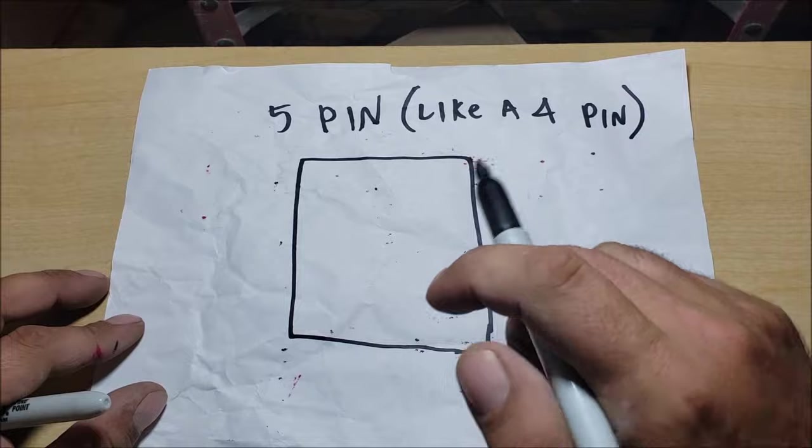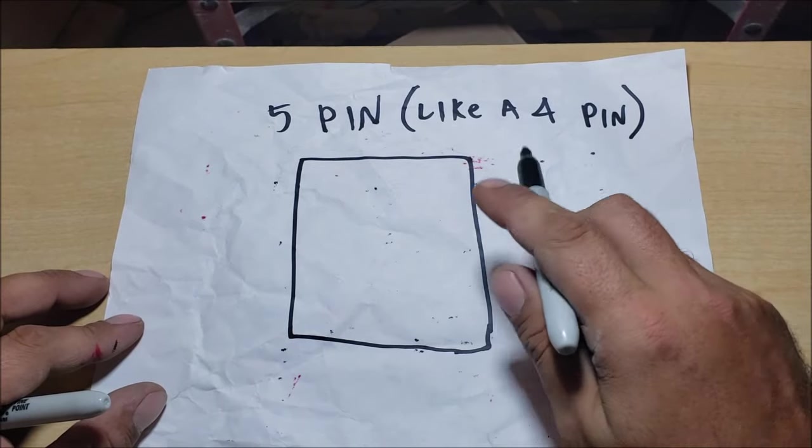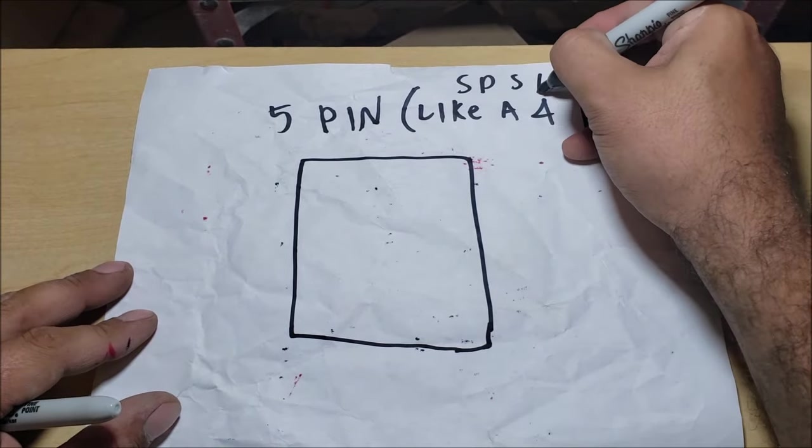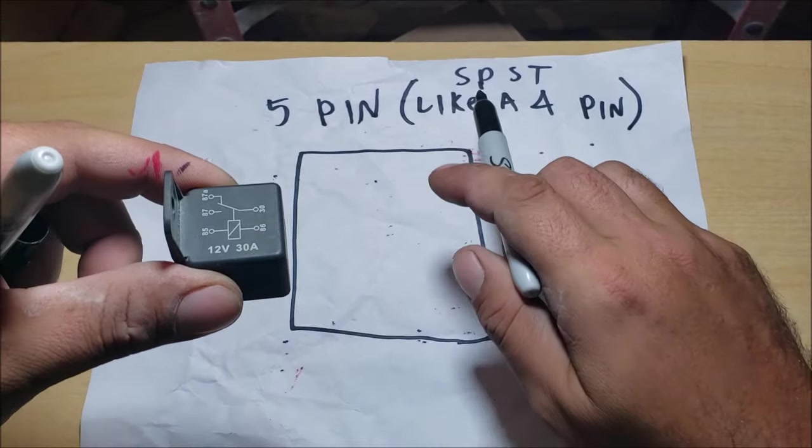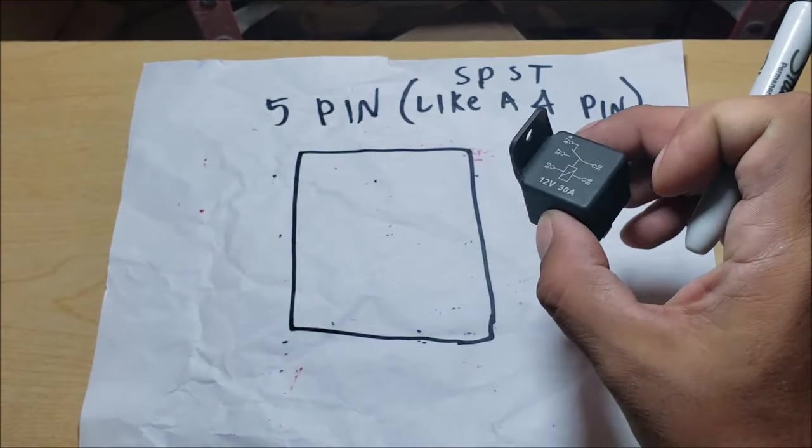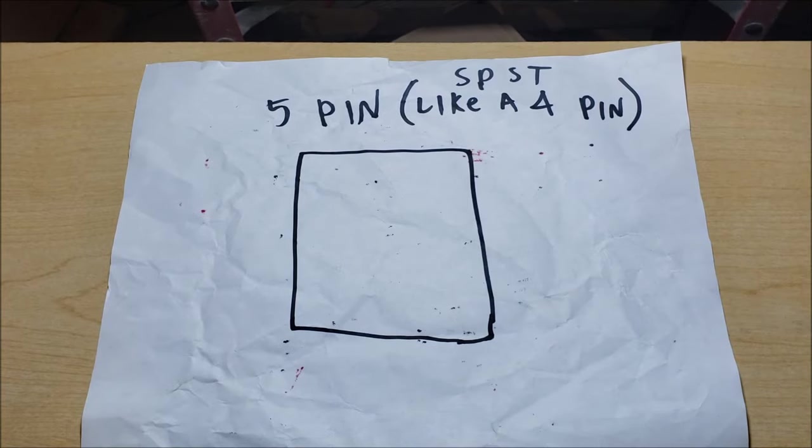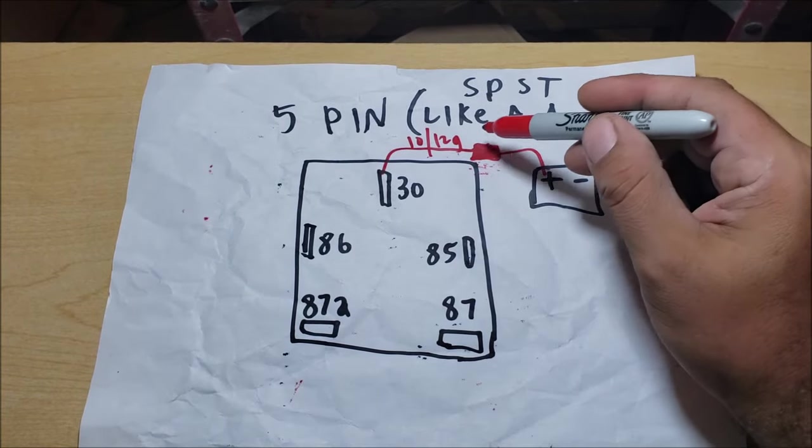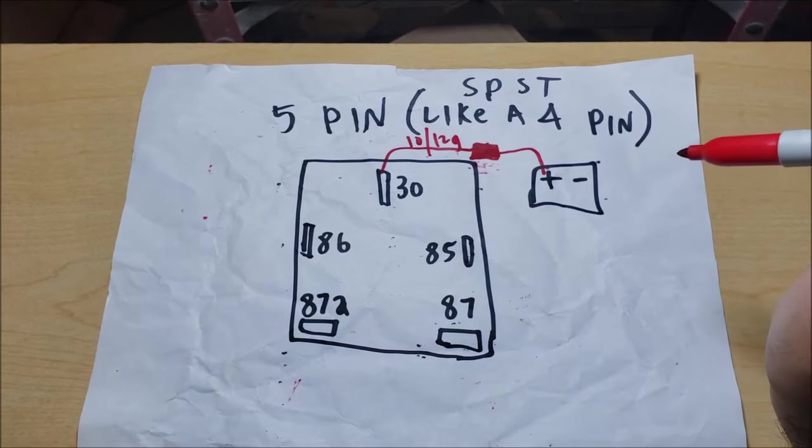They're looking for an on and off switch but they buy the five pin when they only needed a four pin. This is where we're wiring a five pin like a four pin, single pole single throw. So you need your five pin to act as a single pole single throw, it's super easy but when you're first getting into this, I get it, it can be confusing. Let's do it. The same thing from a battery or junction source, 10 or 12 gauge wire with the fuse straight to 30.